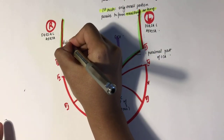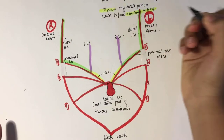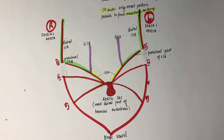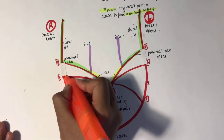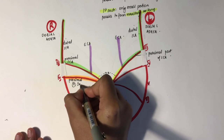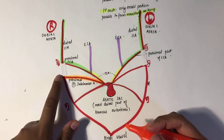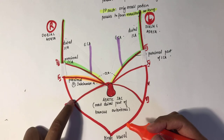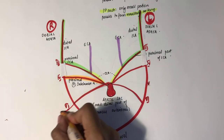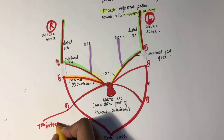The right fourth aortic arch forms the proximal part of the right subclavian artery. The distal part of the right subclavian artery is formed by a portion of the right dorsal aorta and the seventh intersegmental artery, shown here.